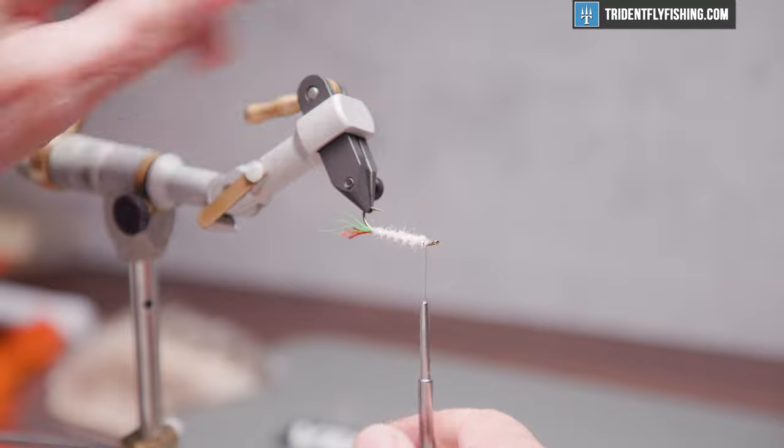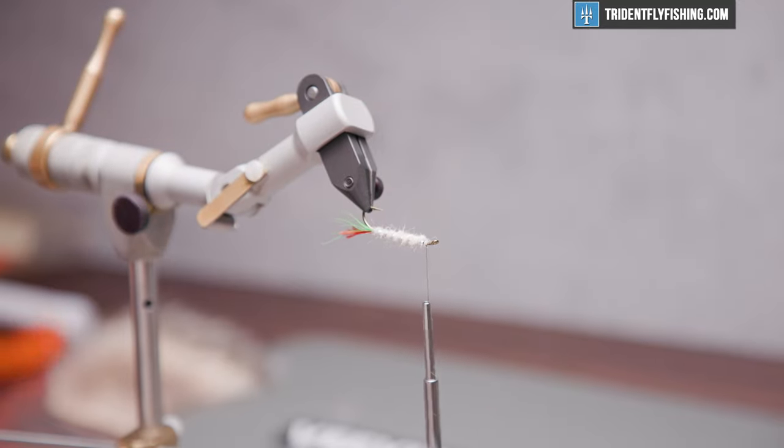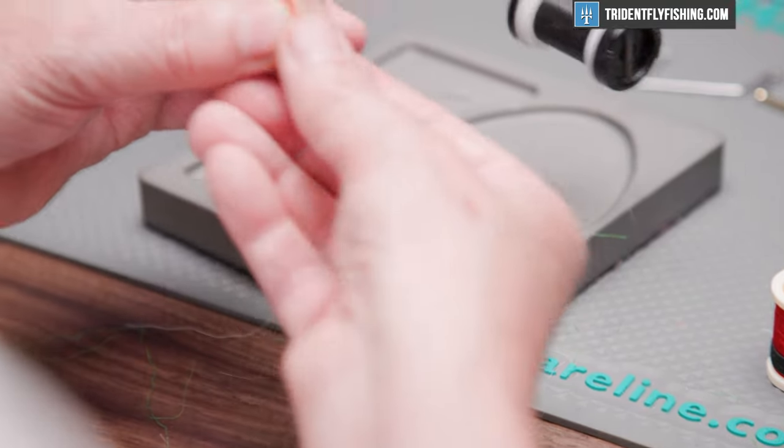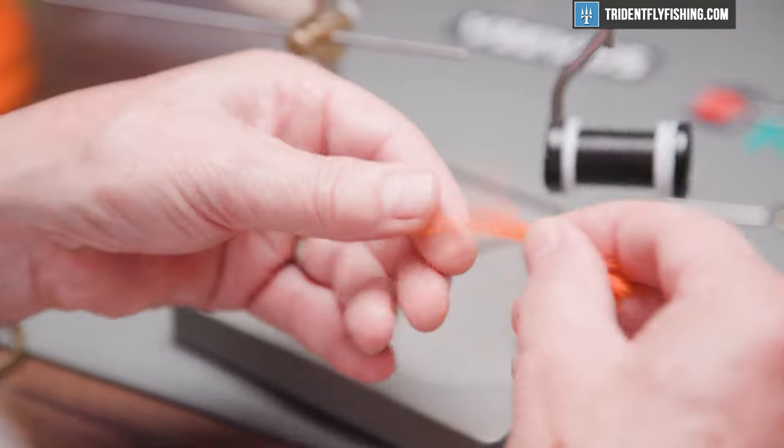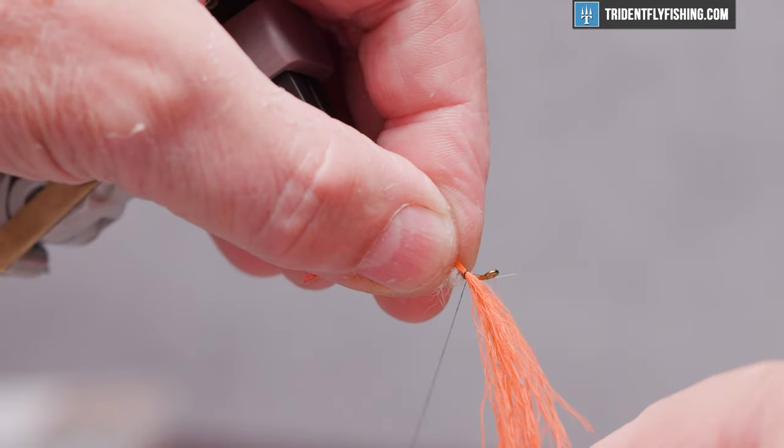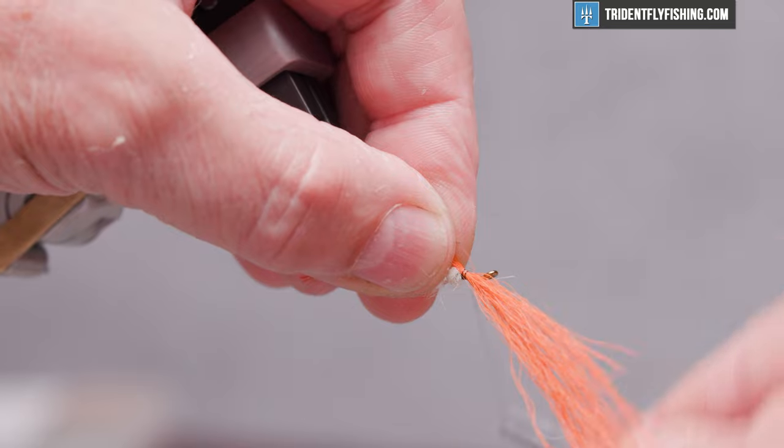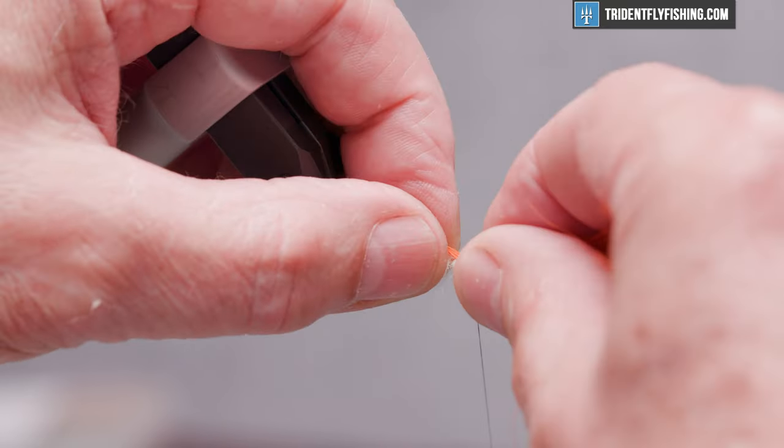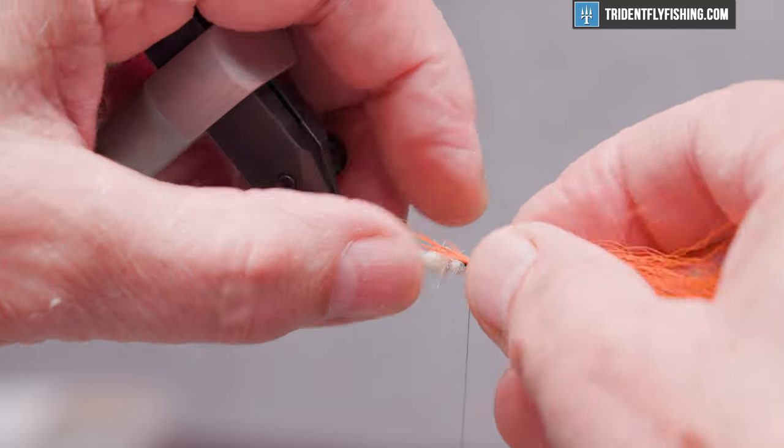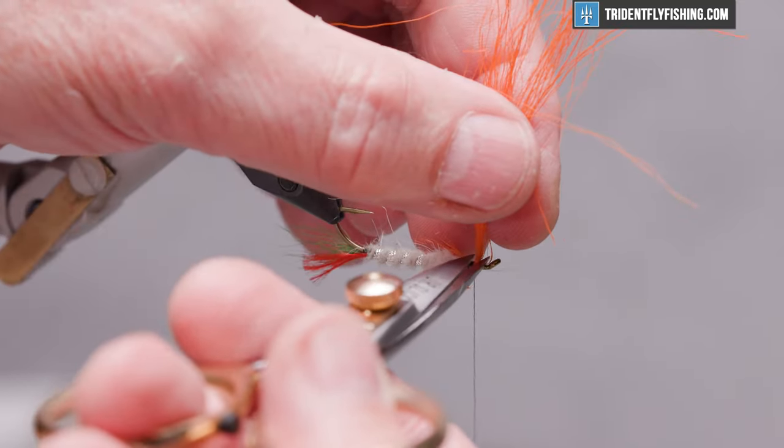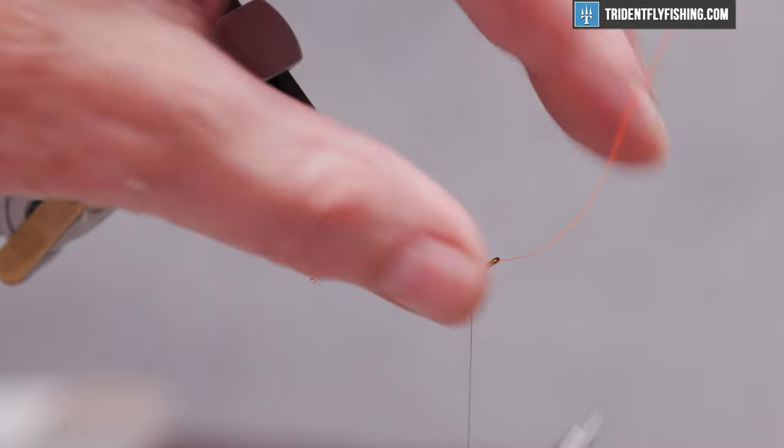Next material we're going to tie in is some orange bucktail for the throat, so this is going to be on the bottom of the hook. We want about as much as we use for the tail, so it's fairly sparse. Tie this in right on the bottom of the hook. It's just a tad long. Snip off our excess material on the left.